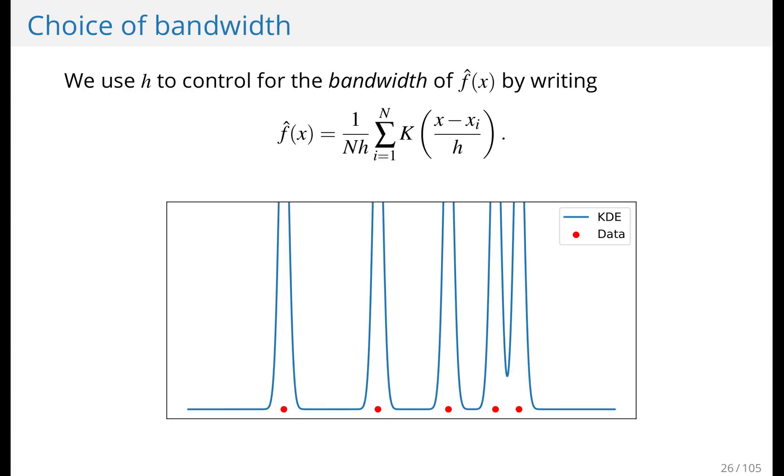However, the choice of bandwidth is very important. We use a bandwidth h and we divide through in the kernel function. If h is large, then it will spread the kernel function out. We have to divide by h on the outside of the kernel function again to ensure that the integral equals one. So that's why you have an h outside and inside of the kernel function, capital K.